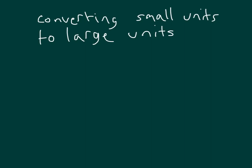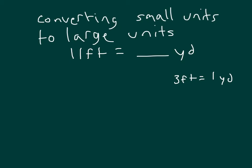In both of the previous problems, we are converting from larger units to smaller units. What if we're converting smaller units to larger units? If we had 11 feet equaling blank yards, we're going from a smaller unit to a larger unit. Recall that the relationship is that three feet does equal one yard. We can rewrite this as 11 times one foot equaling how many yards. And recall that we can rewrite this relationship so that one foot does equal one-third of a yard.